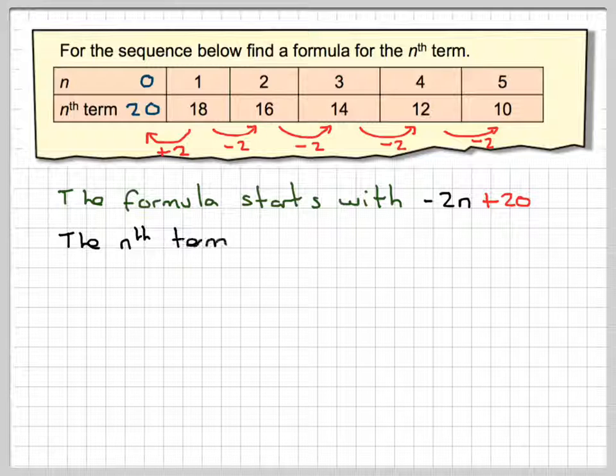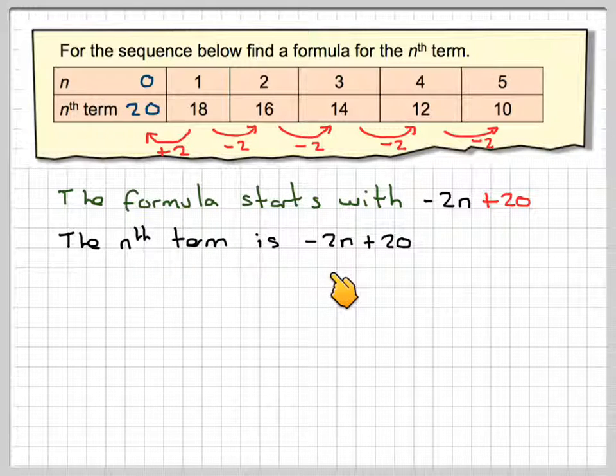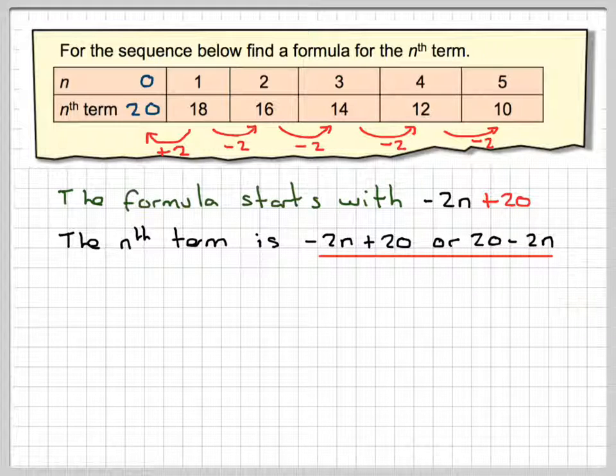So, the nth term is going to be minus 2n plus 20, or 20 minus 2n.